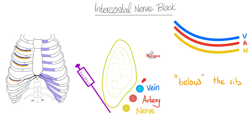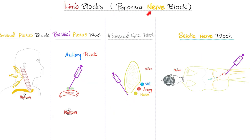Limb blocks or peripheral nerve blocks include cervical plexus, brachial plexus, intercostal block, wrist blocks, femoral block, lateral femoral cutaneous, and others — not only extremities, but any peripheral nerve. The intercostal block is the same mechanism: regional anesthesia achieved by injecting a local anesthetic drug. Don't forget the neurovascular bundle is below the rib, not above it. The mnemonic from above downward is: vein, artery, nerve.